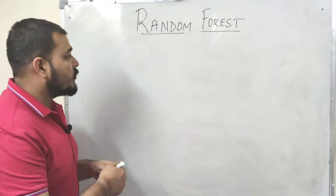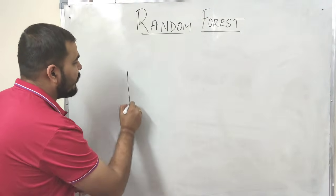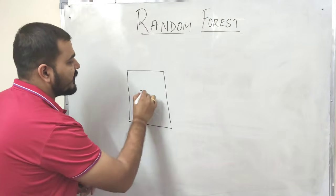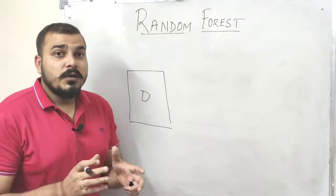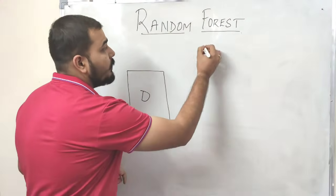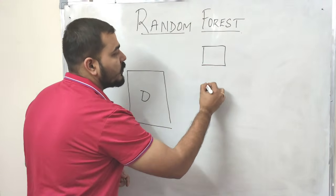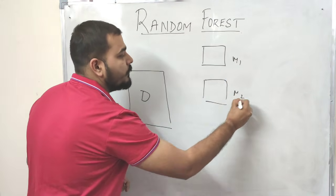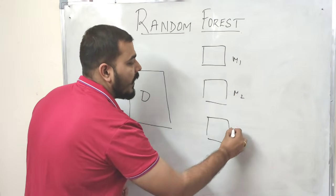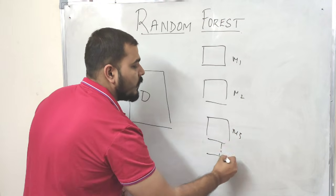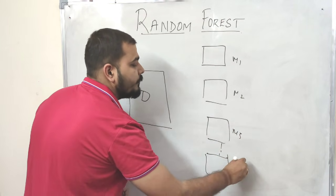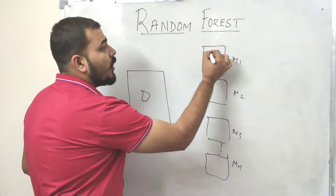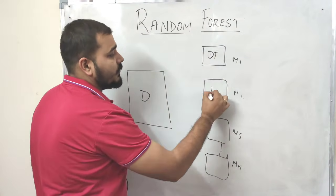Let me show you some examples. Suppose I have a dataset D. In bagging we have many base learner models — M1, M2, M3, and many more up to MN. Now when designing this model in random forest, these models are called decision trees. We are going to use decision trees as our base learners.